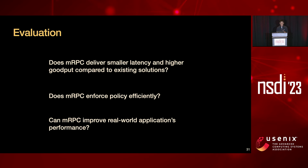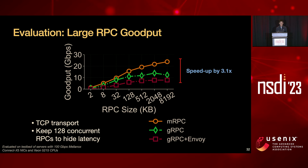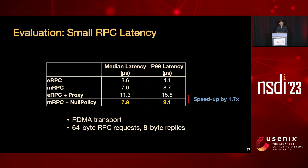With those challenges addressed, let's look at the evaluation. We implemented the MRPC framework in about 32,000 lines of code in Rust. We focus on three questions: Does MRPC deliver better performance? Does MRPC enforce policies with negligible overhead? And can MRPC improve real-world application performance? For large RPC goodput measured on TCP transport with 128 concurrent RPCs to saturate the link, compared to state-of-the-art gRPC and its proxy approach, our solution speeds up throughput by 3.1 times. For small RPC latencies on RDMA transport, compared with state-of-the-art ERPC and its proxy solution, our MRPC framework speeds up small message latency by 1.7 times.